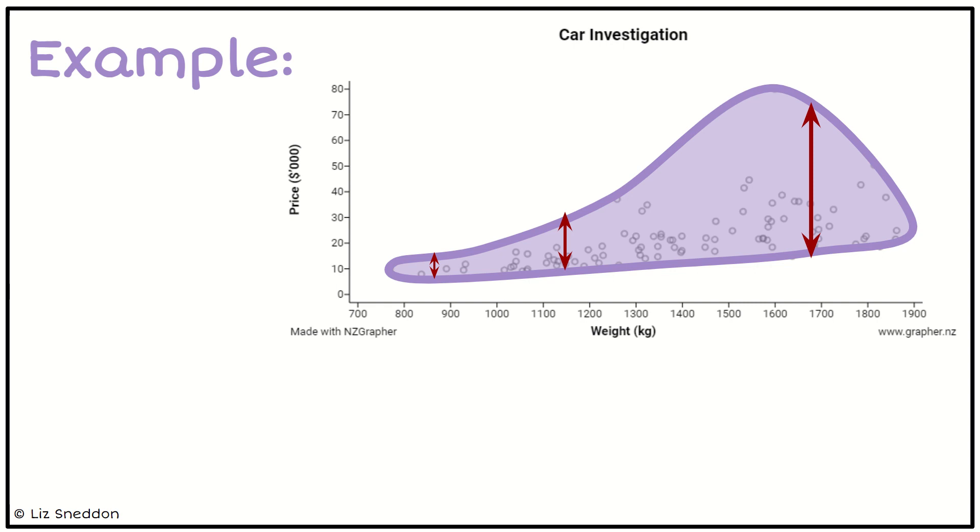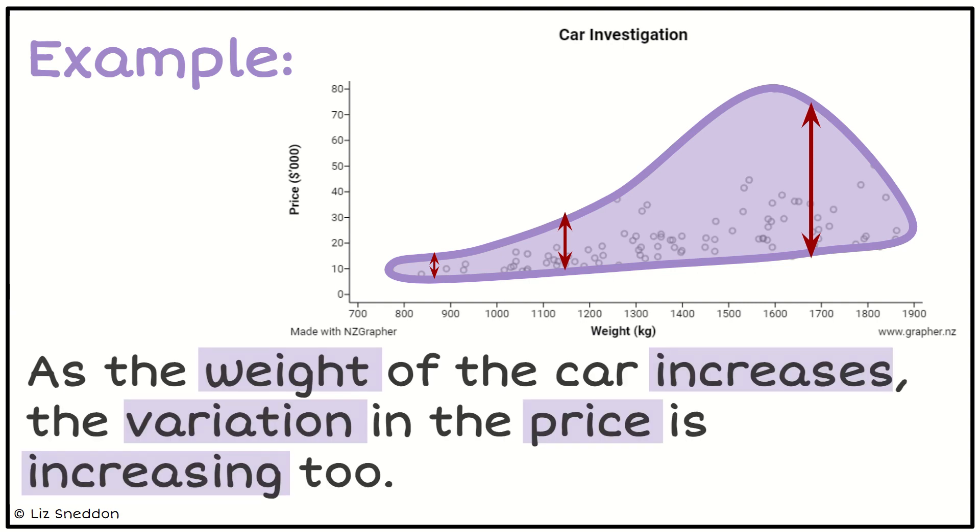That's what we want to be able to write out as a pattern. We always do this as the explanatory variable increases. So as the weight of the car increases, the variation in the price is increasing. There's one example for us.